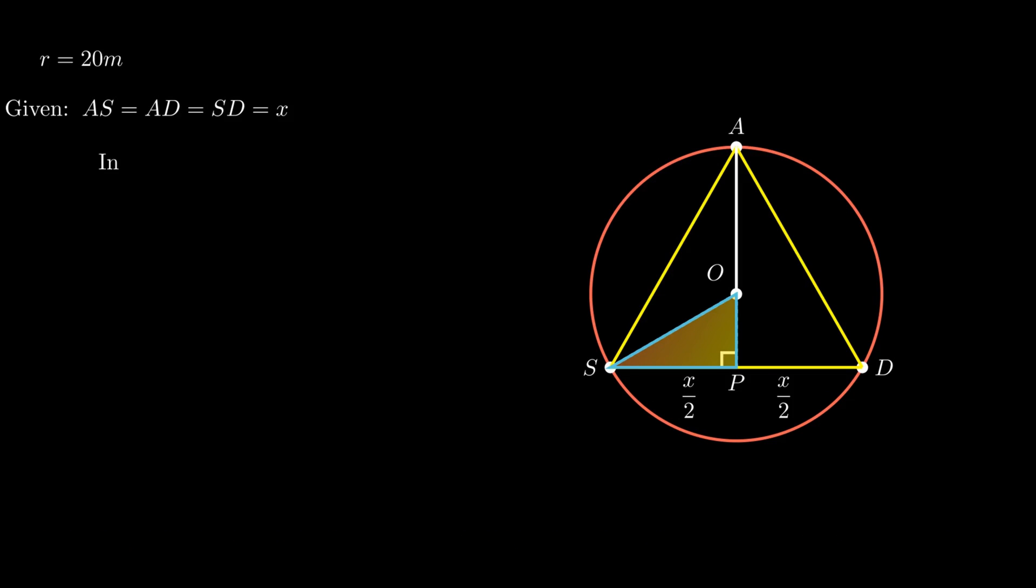Now in triangle OPS, by using Pythagoras theorem, we get square of OS is equal to sum of square of OP and square of SP. On substituting the corresponding values of OS, OP, and SP, the equation becomes square of R is equal to sum of square of OP and square of X by 2.